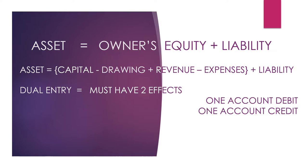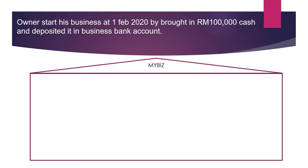Now let's look at how transactions are actually recorded in the books of accounts. Let's say the business just started — there's nothing in the business. It just has a name, let's say MyBiz. The owner of MyBiz started the business on 1st February 2020 by bringing in 100,000 in cash and depositing the money into the business bank account.